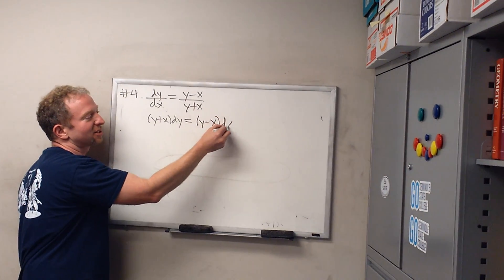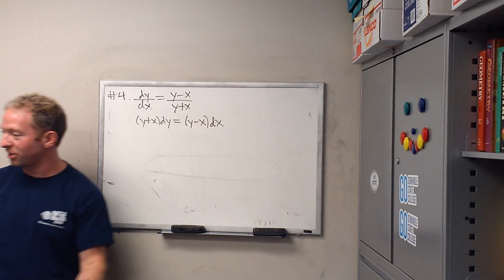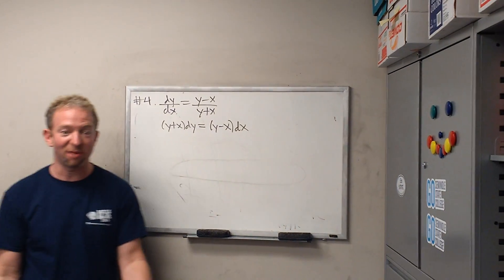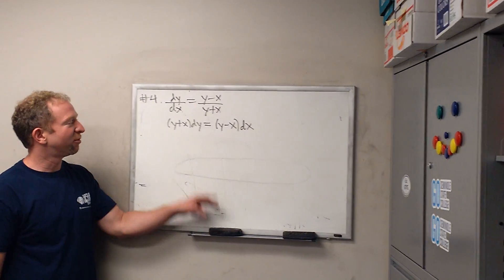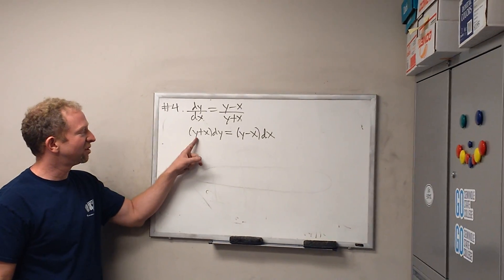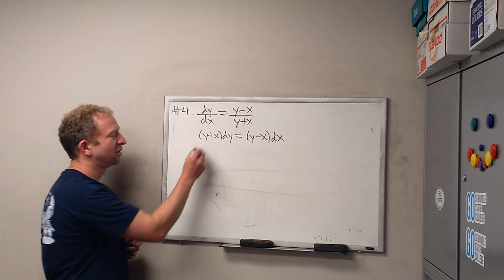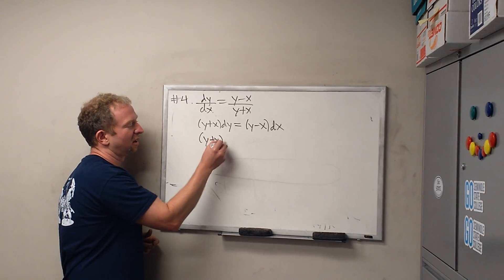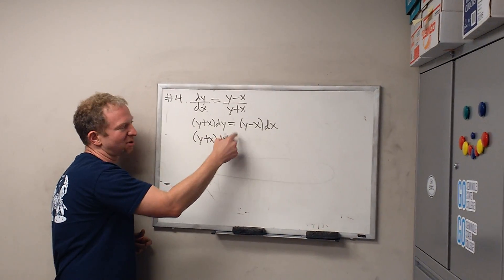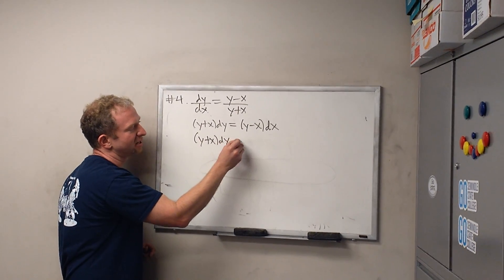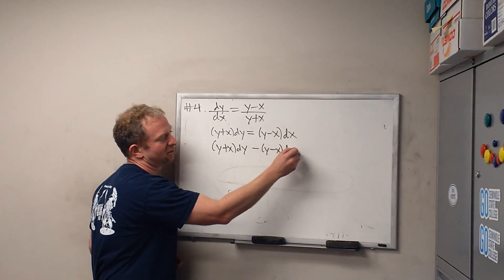Since this is in the section on homogeneous differential equations, it's probably going to be homogeneous. Before we check that it's homogeneous, shouldn't we write it a certain way? Don't we usually have everything equal to zero? Maybe subtract this — so it'll be minus y minus x dx equals zero.